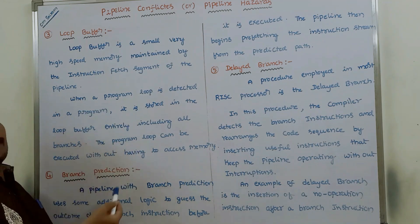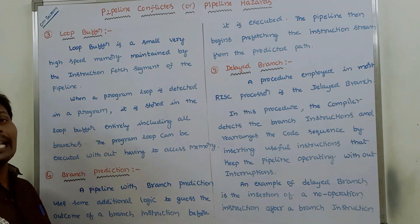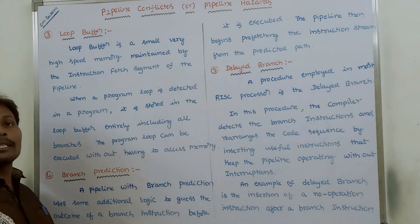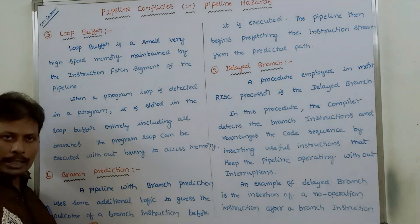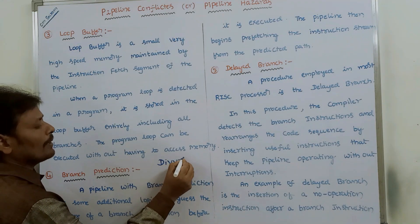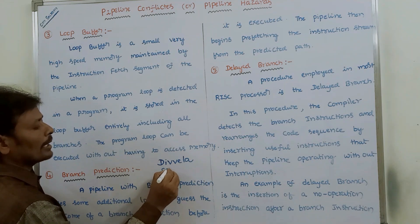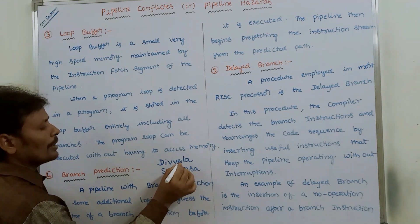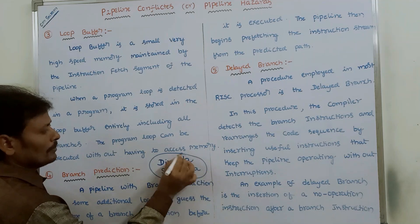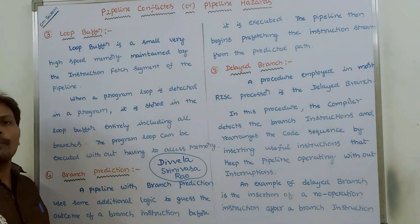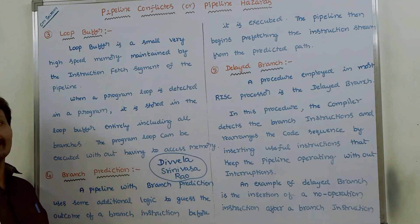Before this video, there is a previous video on how to handle pipeline conflicts such as resource conflicts and data dependency conflicts — the link is available in the comment box. Please subscribe to the YouTube channel and click on the bell icon to get future updates, and watch the playlist on Computer Organization or Computer Architecture for better understanding of the entire course.